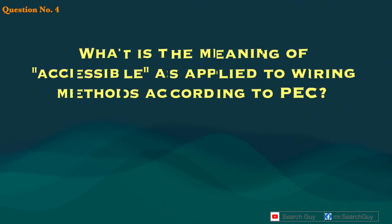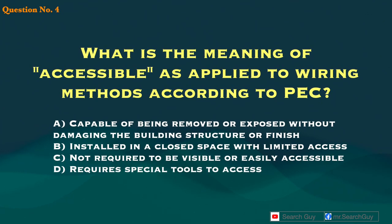Question 4. What is the meaning of 'accessible' as applied to wiring methods according to PEC? A. Capable of being removed or exposed without damaging the building structure or finish. B. Installed in a closed space with limited access. C. Not required to be visible or easily accessible. D. Requires special tools to access.